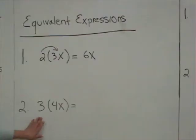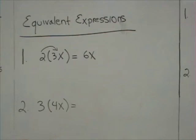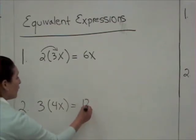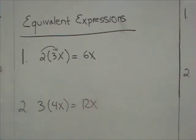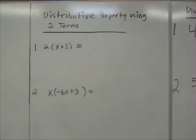If you have 3 that multiplies 4x, we know that when you multiply 3 times 4, you're going to get 12. So 12x is equivalent to 3 times 4x. I'm going to be using the distributive property with two terms.